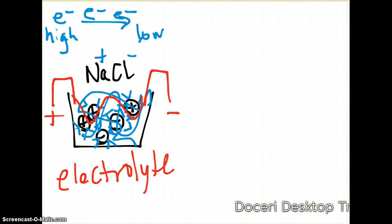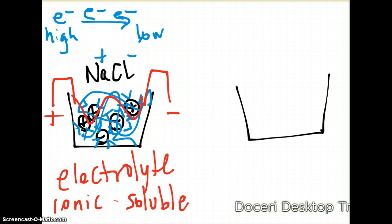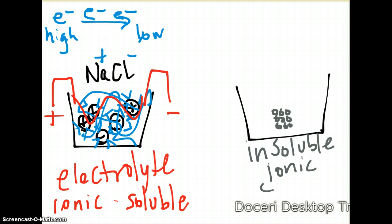Electrolytes need free charges to move through the substance. When you have an ionic compound that is soluble — meaning it dissolves so that ions are free to move — you have something that can conduct electricity. By contrast, if you have an ionic compound that is not soluble, the water hasn't pulled those ions apart.